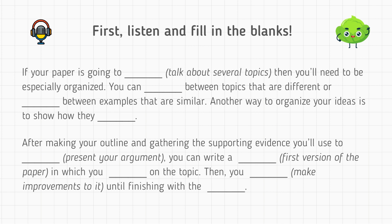After making your outline and gathering the supporting evidence you'll use to make your case — present your argument — you can write a first draft, the first version of the paper, in which you go into detail on the topic. Then you revise the paper — make improvements to it — until finishing with the final draft.